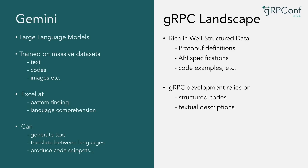Gemini is a Google-developed large language model trained on massive datasets such as text, code, images, and much more. After training, Gemini excels at language comprehension and pattern recognition, which means it can generate text, translate between languages — and this includes not only programming languages but also human languages and machine code — and it can understand and produce code snippets.